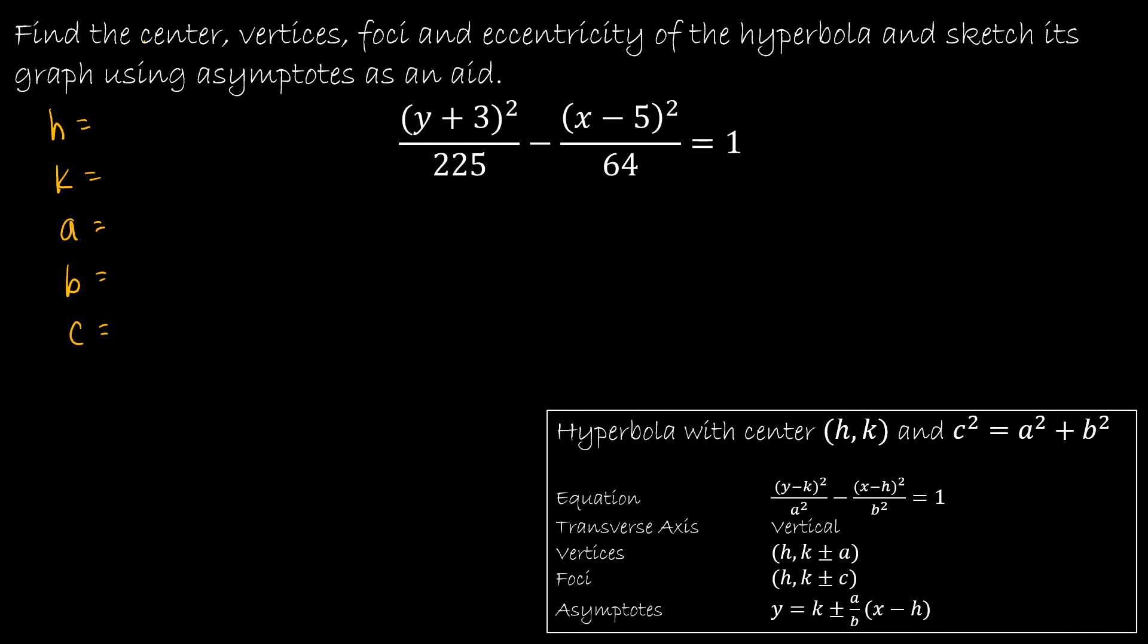The first thing is that I know that this Y value came first. And that's how I knew that the transverse axis was going to be vertical. And therefore, the value below that, of course, is A squared. So A squared is 225. So the square root of that is 15. The B value is below the X minus H squared. So that is the square root of 64 or 8.